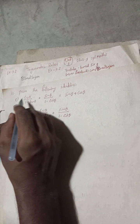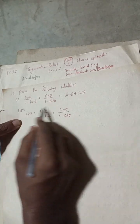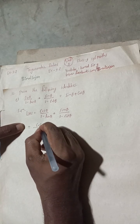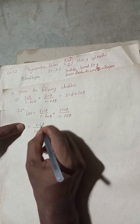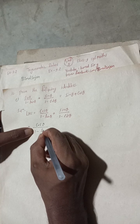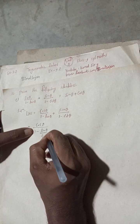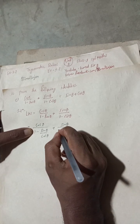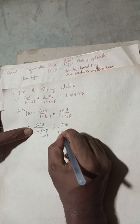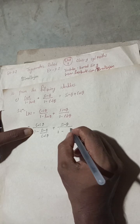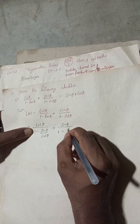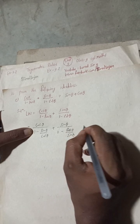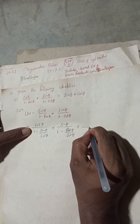Let's begin the solution. I have taken the LHS. Now, cos θ as it is, and 1 minus tan θ can be written as sin θ by cos θ. Plus sin θ, and 1 minus cot θ can be written as cos θ by sin θ.